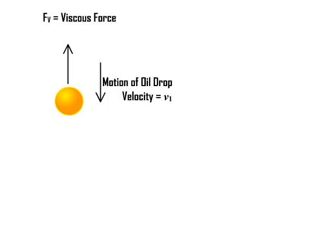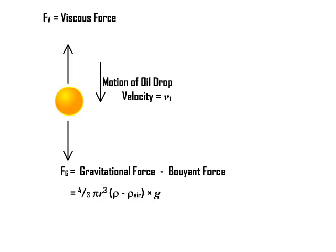Let us see what forces act on the oil drop. While calculating the gravitational force, we have to take into consideration the buoyant force. Now Fg which is the gravitational force is equal to 4/3 pi r cube (rho minus rho air) into g where 4/3 pi r cube is the volume of the oil drop and g is the acceleration due to gravity. Rho is the density of oil and rho air is the density of air. Using Stokes law, Fv equal to 6 pi eta r v1 where r equal to radius of oil drop and eta equal to viscosity of air.